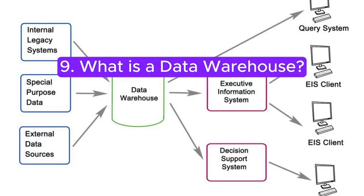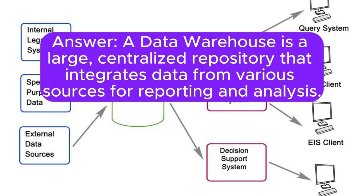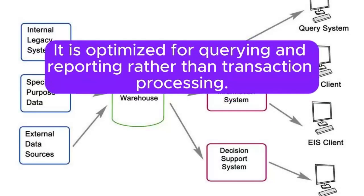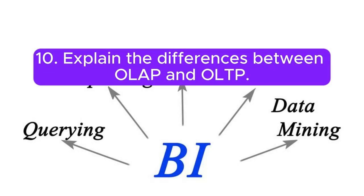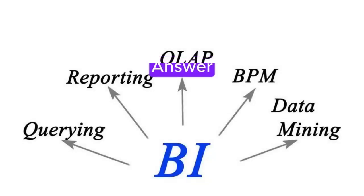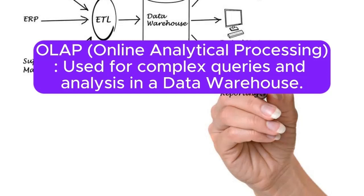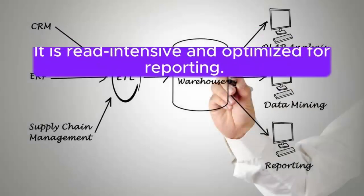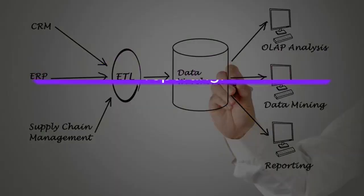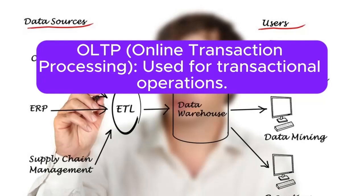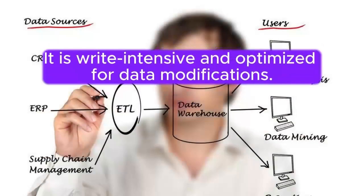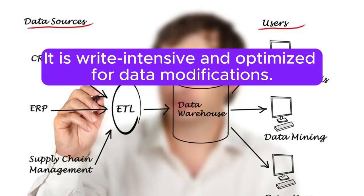9. What is a data warehouse? Answer: A data warehouse is a large, centralized repository that integrates data from various sources for reporting and analysis. It is optimized for querying and reporting rather than transaction processing. 10. Explain the differences between OLAP and OLTP. Answer: OLAP (Online Analytical Processing) is used for complex queries and analysis in a data warehouse — it is read-intensive and optimized for reporting. OLTP (Online Transaction Processing) is used for transactional operations and is write-intensive and optimized for data modifications.